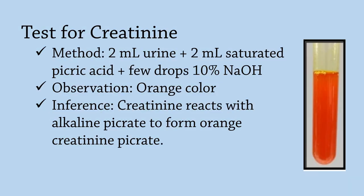Test for creatinine: In this test, take 2 ml of urine sample, add 2 ml saturated picric acid and a few drops of 10% sodium hydroxide. Note the orange color that will be formed. Creatinine reacts with alkaline picrate to form orange creatinine picrate.